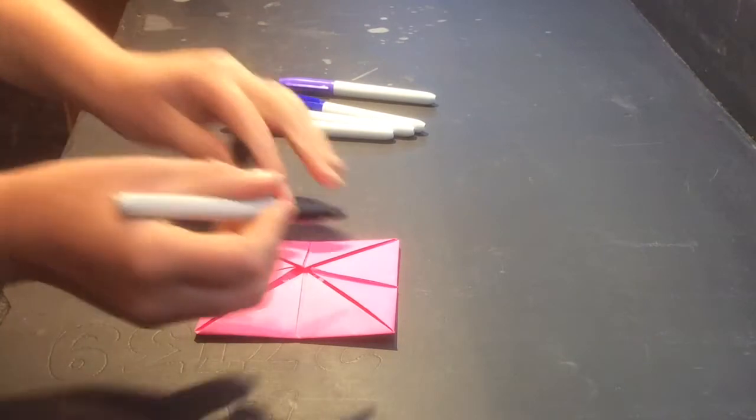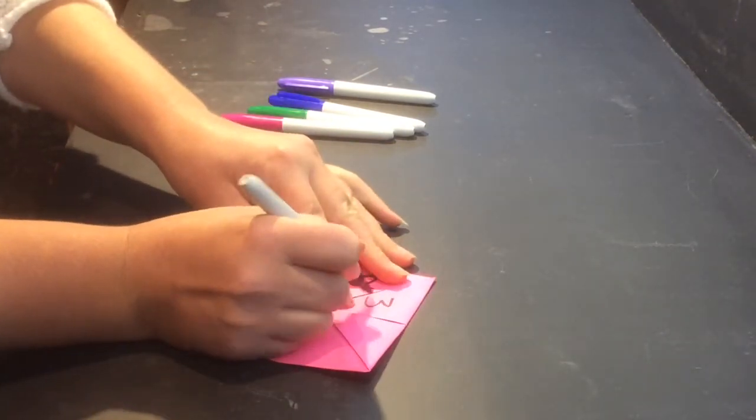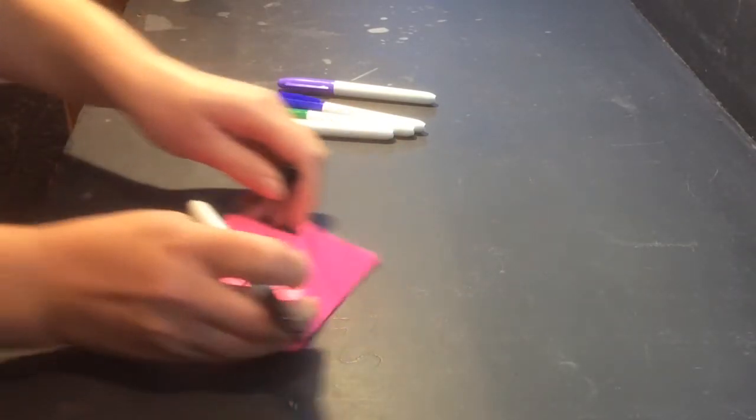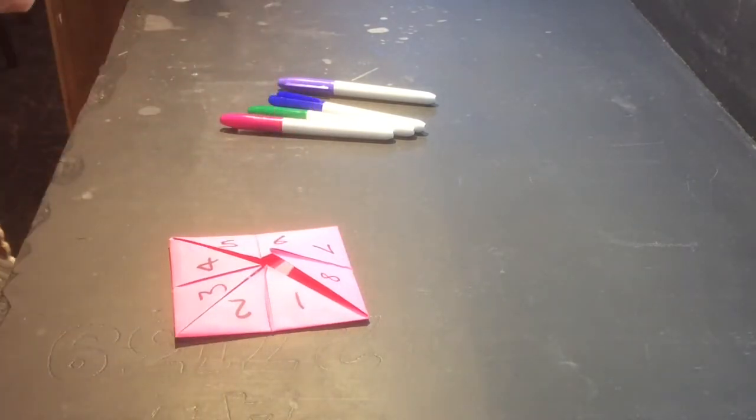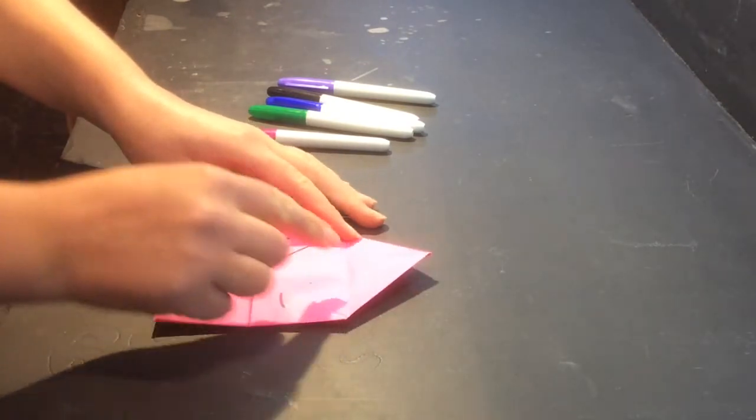Lovely. And then we're going to turn this the other way and we've got all these different triangles now. So what we're going to do is we're going to number them one to eight: one, two, three, four, five, six, seven, eight.